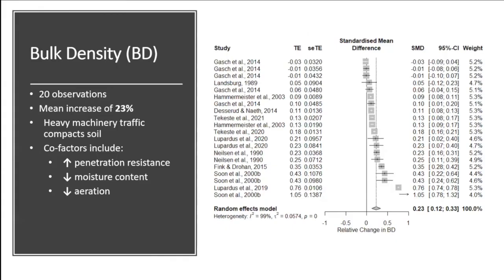Let's look at bulk density. On the left you have the authors; in the middle you have the standardized mean difference. Zero means no change at all. If it's above zero, that means there was an increase in bulk density across all those papers. On average, across all these papers, bulk density increased 23%. We ended up seeing a lot of evidence — not just here but everywhere — that bulk density and compaction of soil is a major issue.